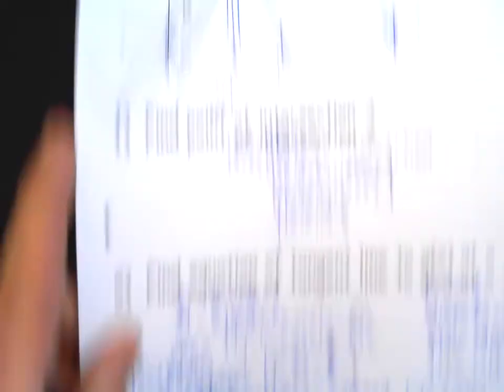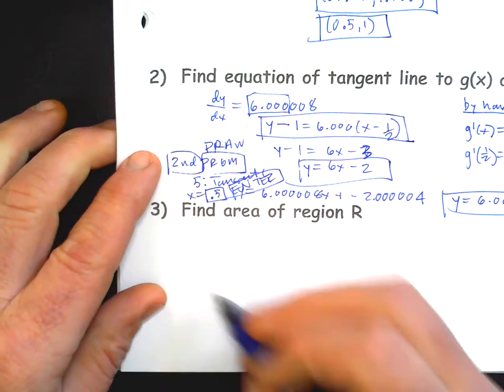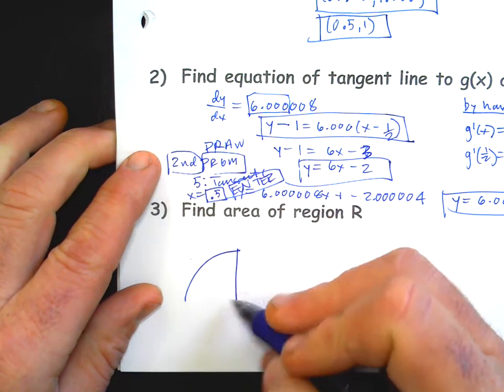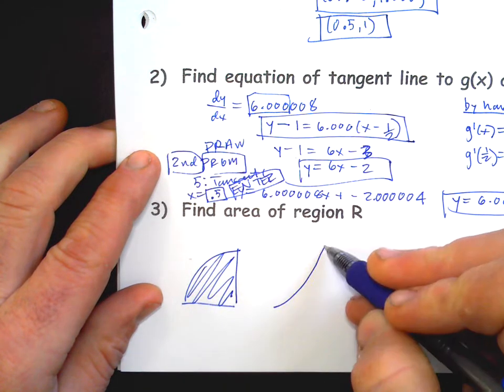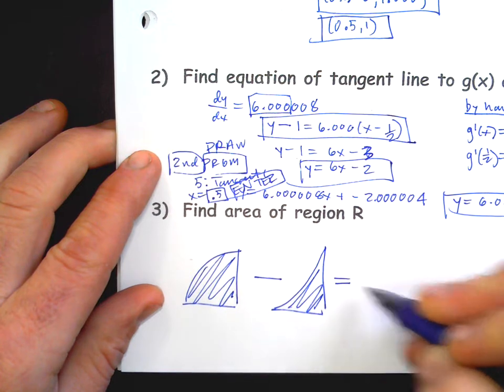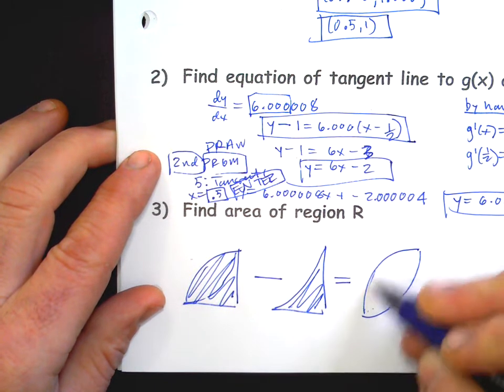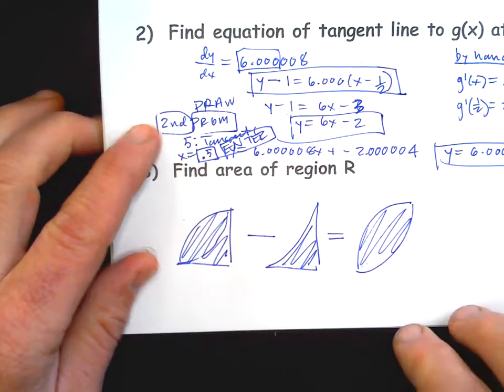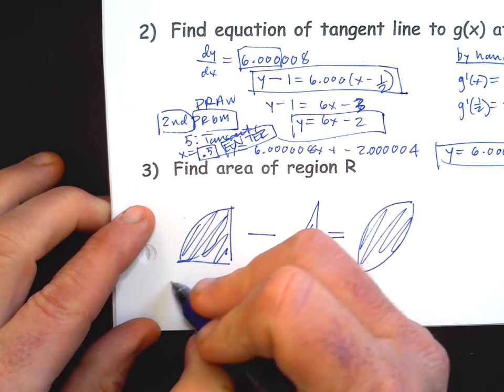Okay, find the area of region R. So the area of region R is the area between these two curves. Our strategy is going to be to find the area under the sine curve first and then find the area under the cubic curve and subtract them to get the area that's in between. So I think it's not a bad idea to just kind of write that down. That's my thought.